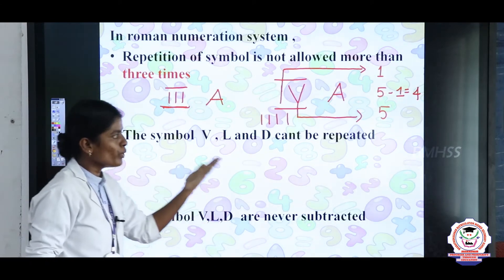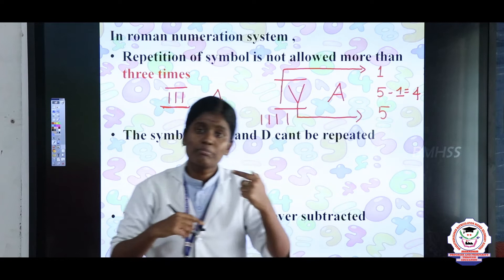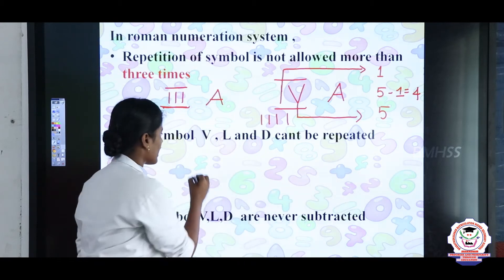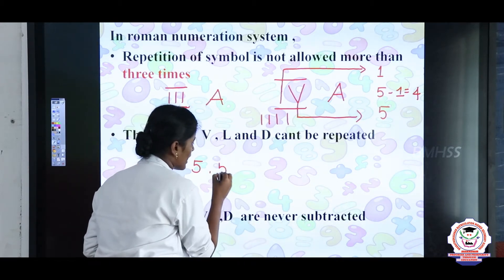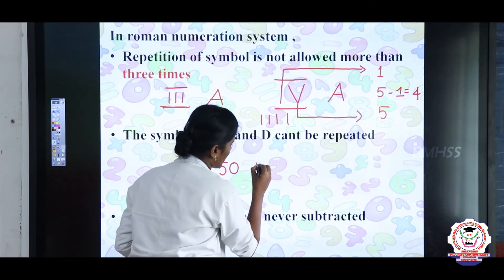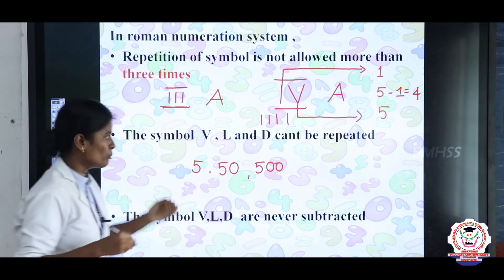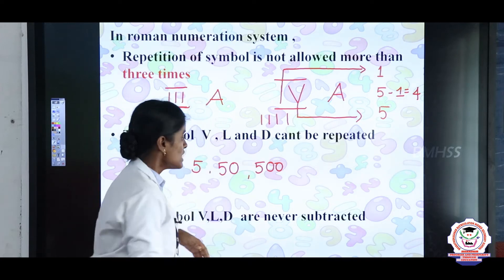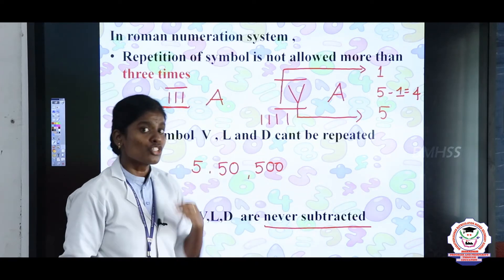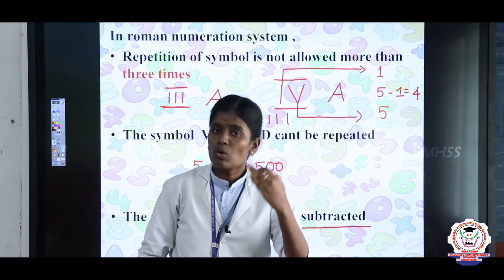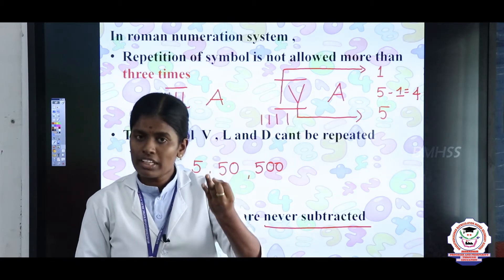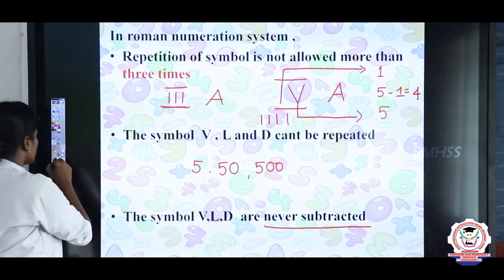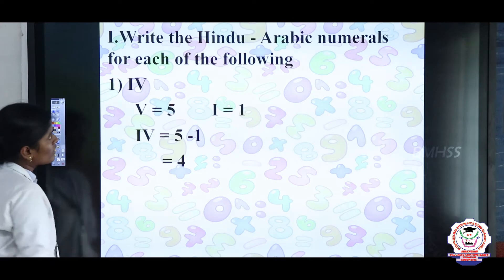The next rule: the symbols V, L, D cannot be repeated. V is 5, L is 50, and D is 500. The rule is that the symbols V, L, D cannot be repeated and cannot be subtracted — never subtracted.